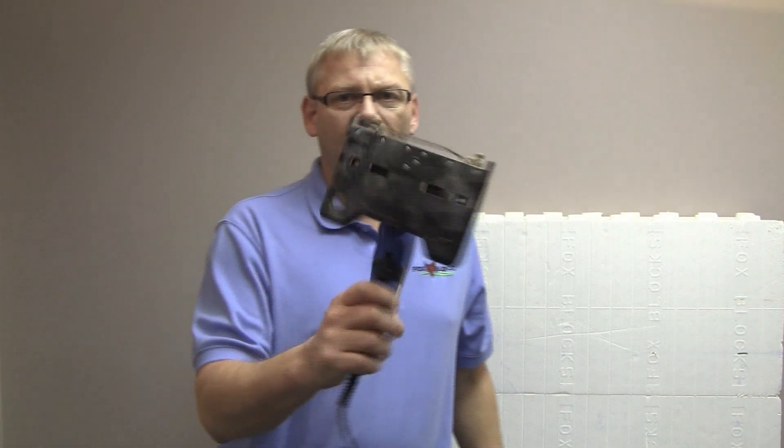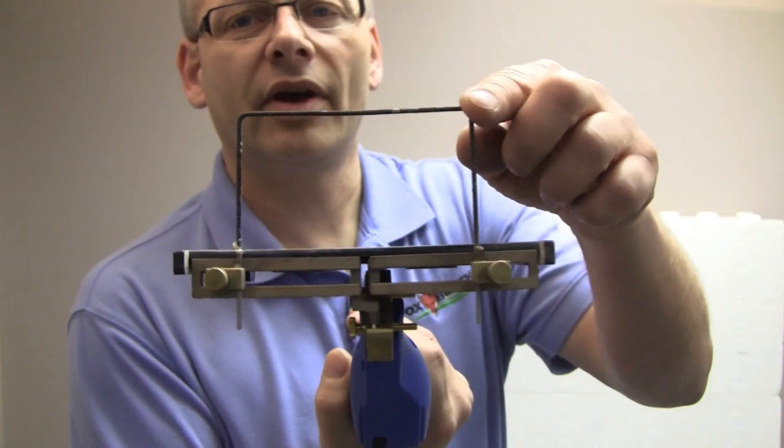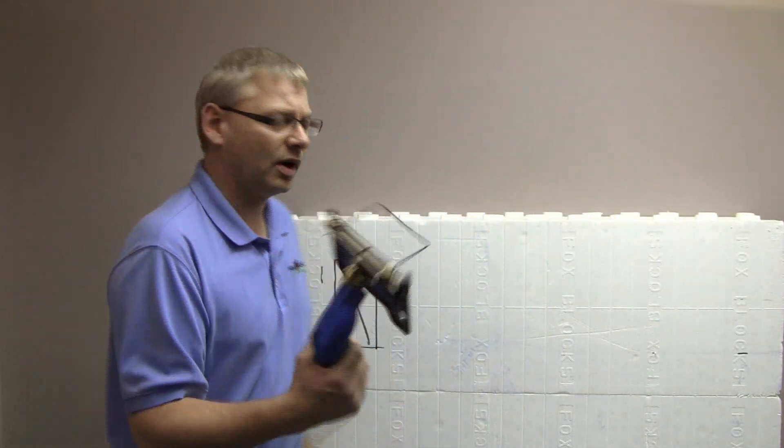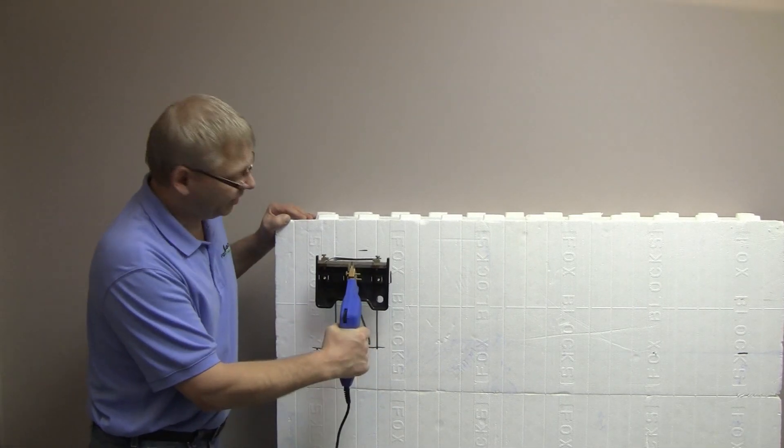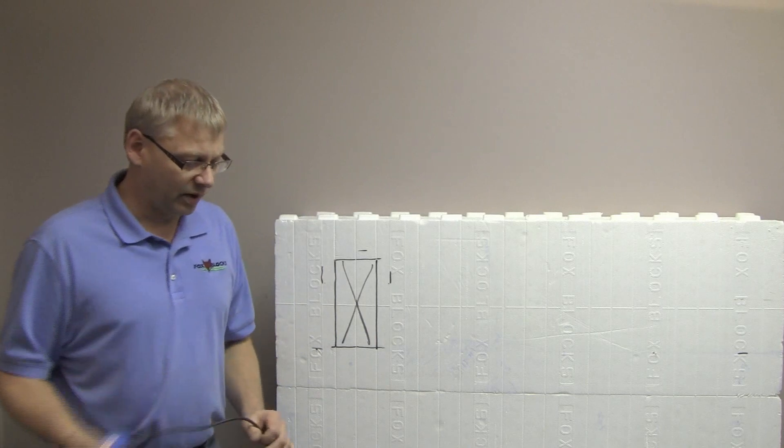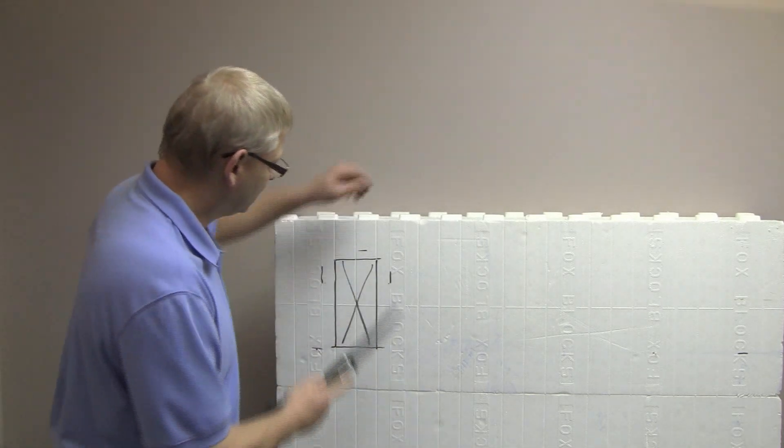One way is by using a hot wire gun, and this has a tip in it already. This one I use for electrical as well. You just push in, pull out, and I can actually sink this one in right here, pull it down, and pull it back out. That's one way to do it. I'm going to cut this out with a pruning saw.